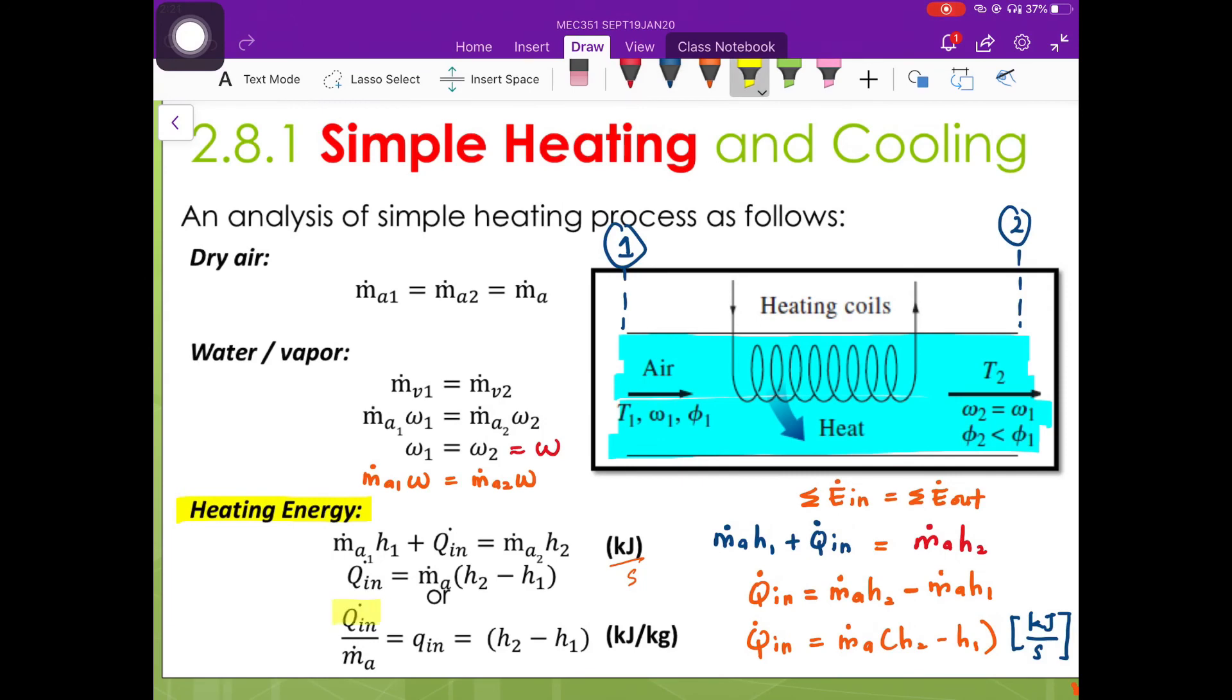If we divide our heat transfer rate at the inlet with the mass flow rate of the dry air, we are going to get heat transfer in the unit of kilojoules per kilogram.